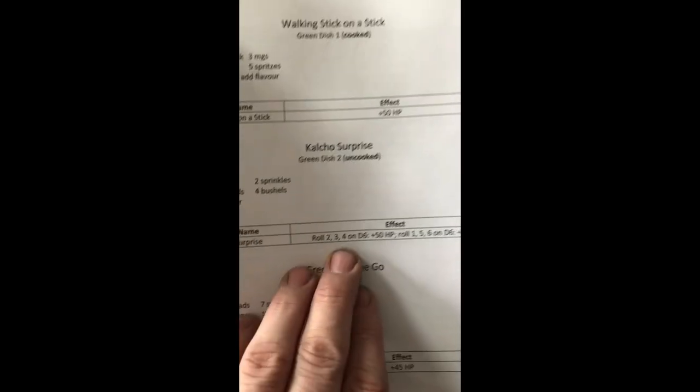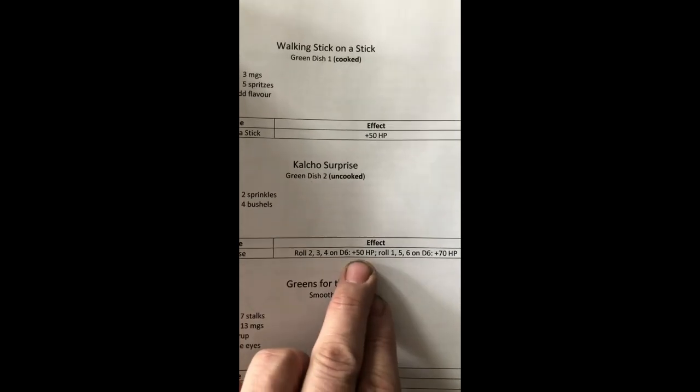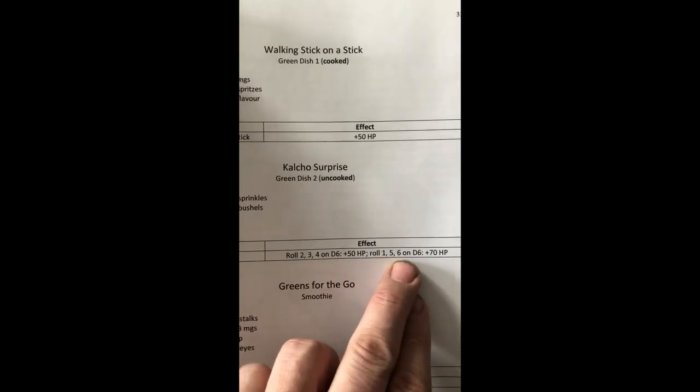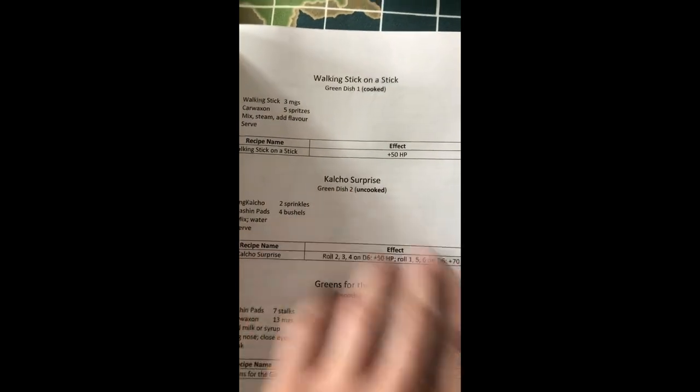How much HP you get. Some of these though, some of the effects are you roll 2, 3, or 4 on a d6 plus 50 HP. Roll 1, 5, or 6 on a d6, you get 70 HP. So, Calaco Surprise is a surprise. And it does that. That's not for every world.